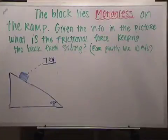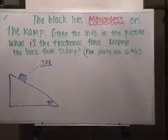The block lies motionless on the ramp. Given the info in the picture, what's the frictional force keeping the block from sliding? For gravity, use 10 meters per second squared. All right, the first thing we do is we draw our force diagram.